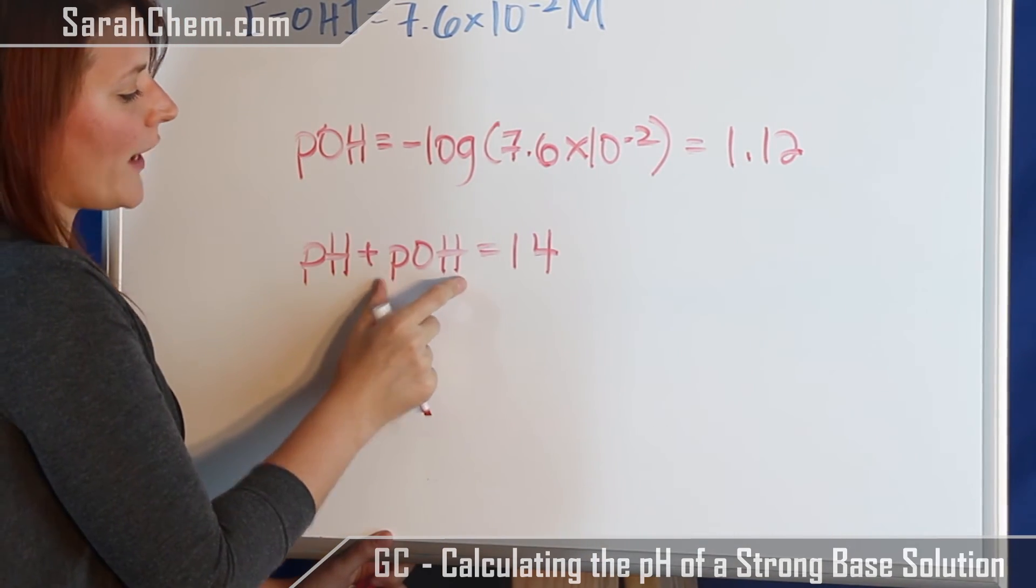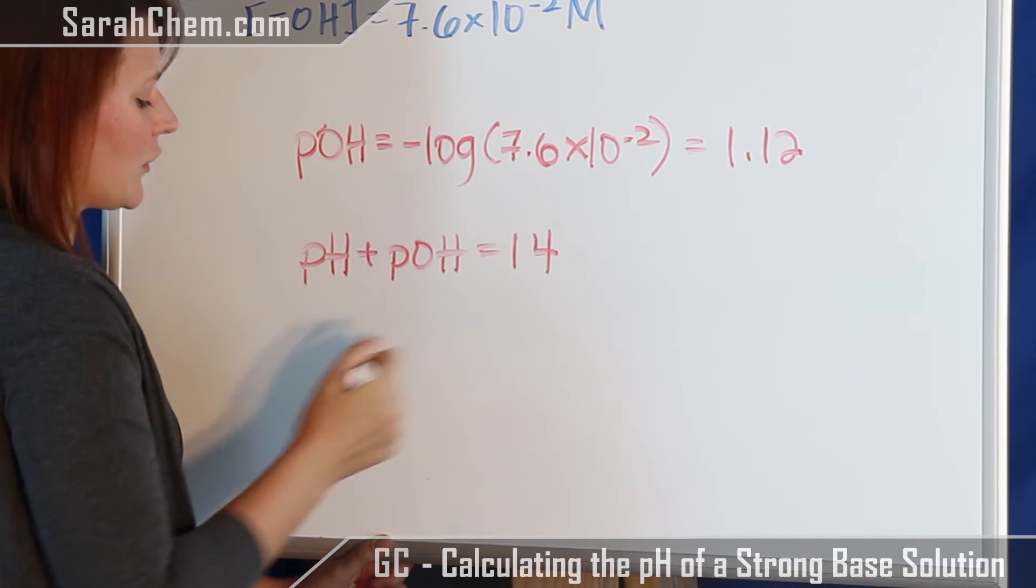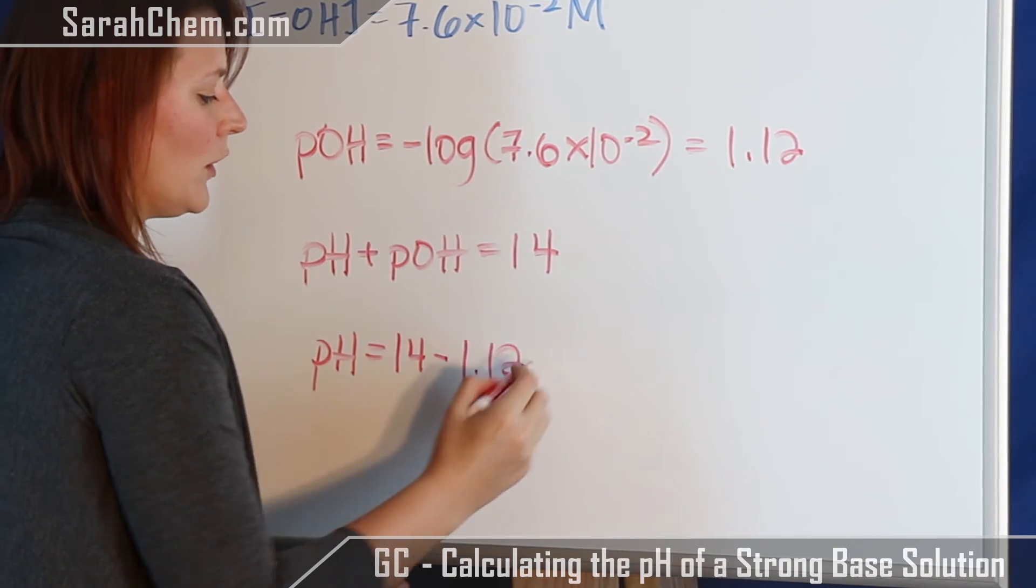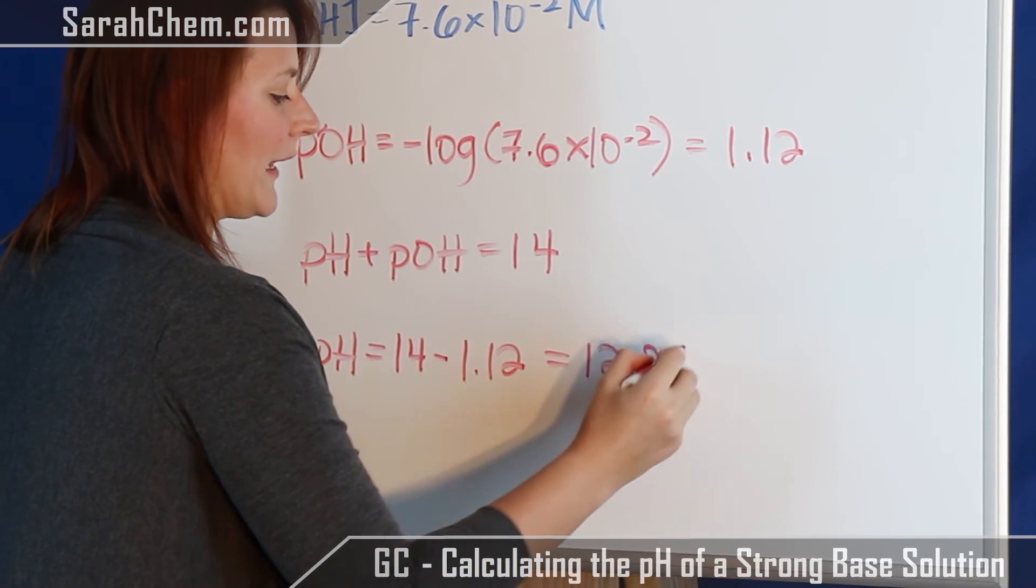So what I can do is subtract my pOH onto this side and I'll solve for my pH. So we have 14 minus 1.12, which gives us a value of 12.88.